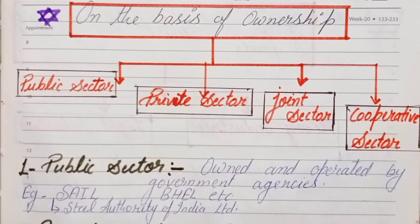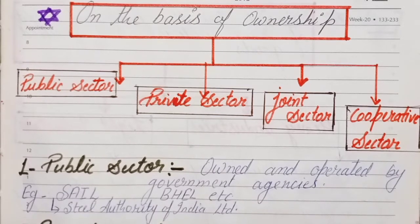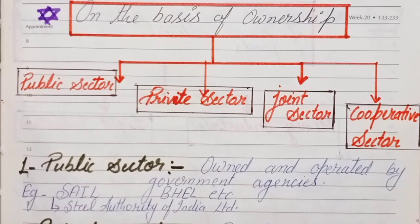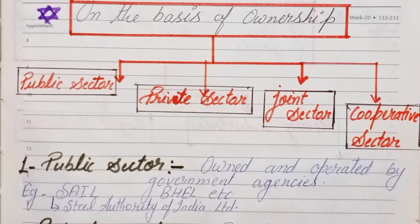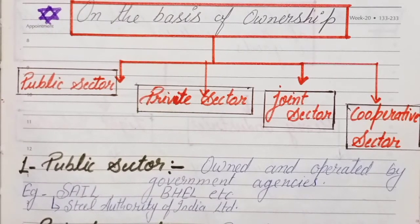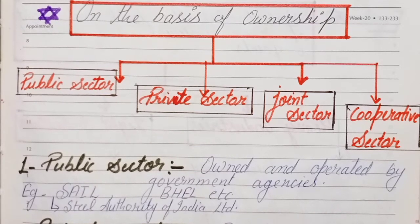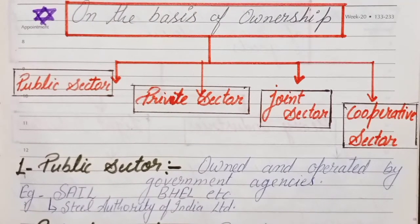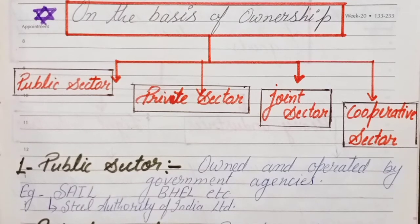Public sector industries are owned and operated by government agencies. For example, SAIL — Steel Authority of India Limited — and BHEL — Bharat Heavy Electricals Limited. These are factories run by government agencies. Workers are appointed and given salaries by the government. Everything is owned by the government — that is called a public sector industry.